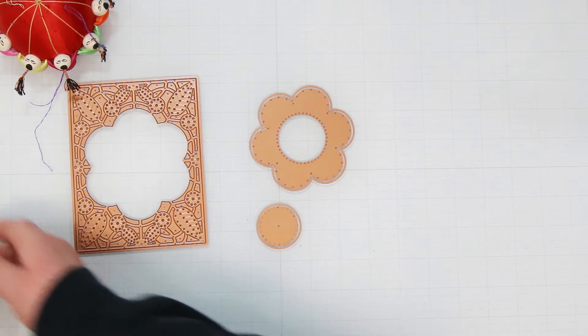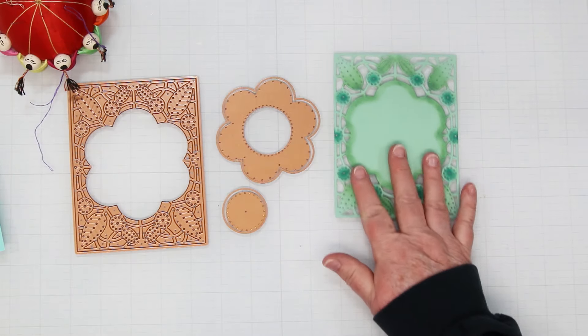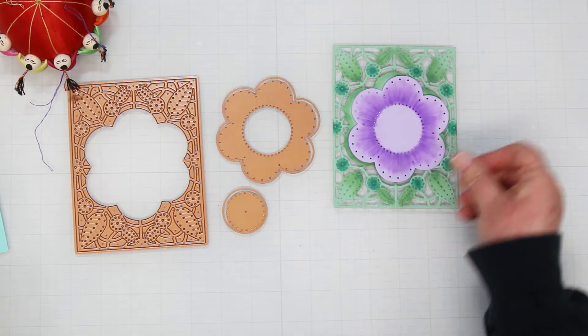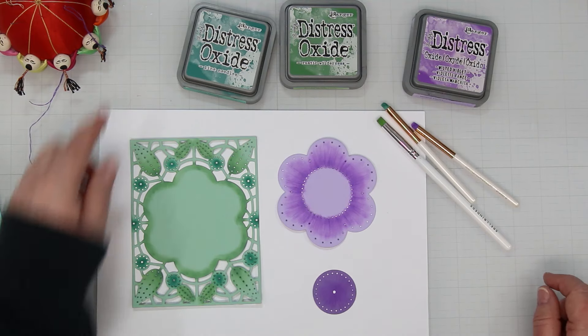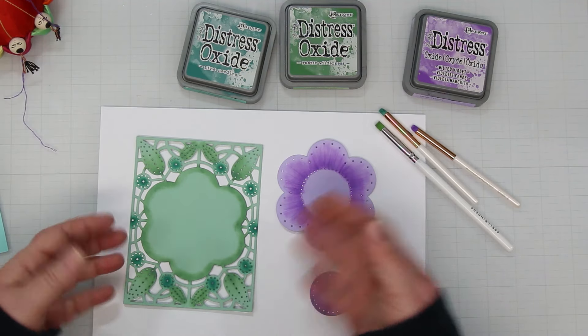There are three parts to the die set. You can use them all or just pieces to create your cards. I've cut mine from Mint Cardstock, Purple Mist and Lilac Blossom.